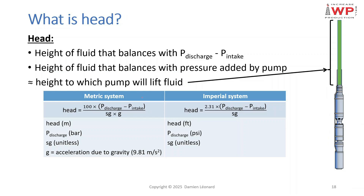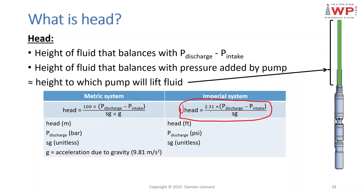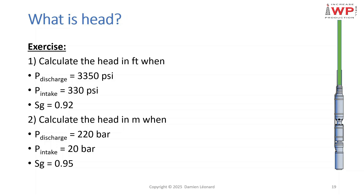To calculate head, there are two formulas: one for the metric system and one for the imperial system. In the metric system, head is expressed in meters: H = 100 × (Pdischarge − Pintake) / (SG × g). In the imperial system, head is expressed in feet: H = 2.31 × (Pdischarge − Pintake) / SG, where pressures are in psi.